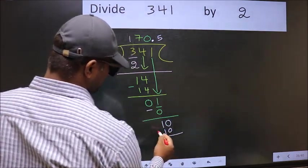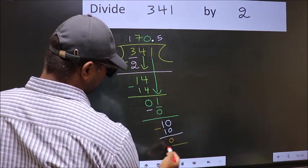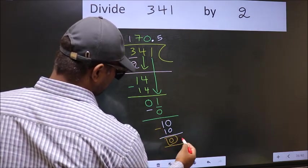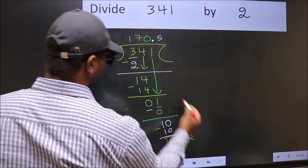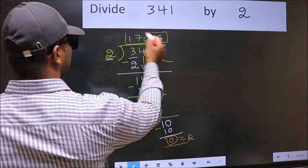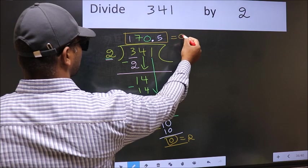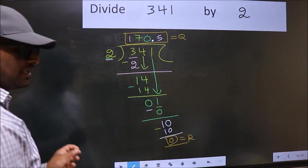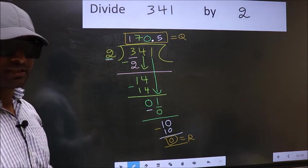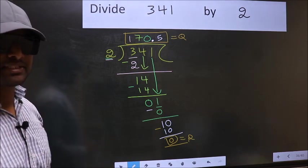Now you should subtract. 10 minus 10, 0. So this is our remainder. And this is our quotient. Did you understand where the mistake happens? You should not do that mistake.